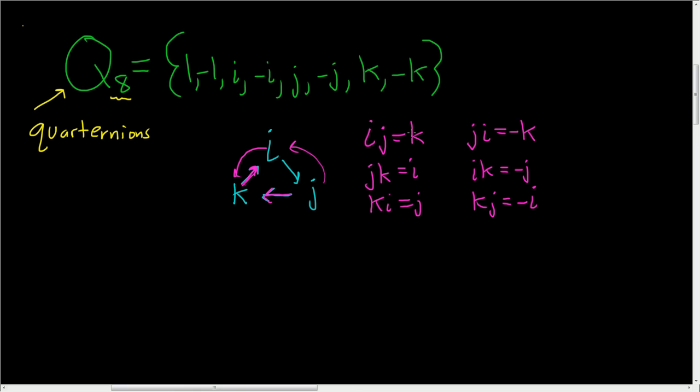So right away, you see that this group is non-abelian. We have IJ equal to K, and yet JI is equal to negative K. So this is a non-abelian group of order 8, because it has 8 elements.